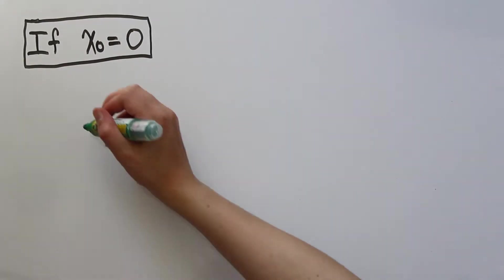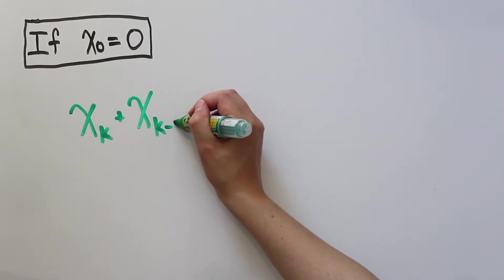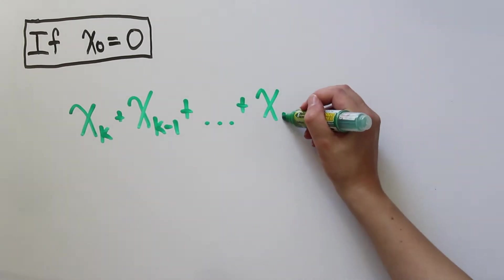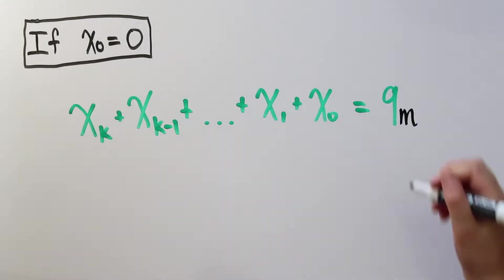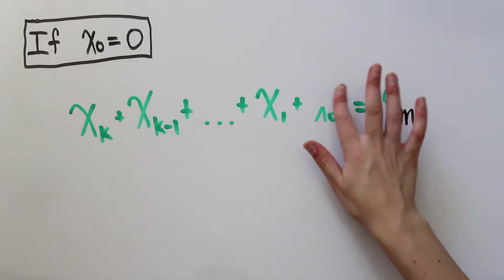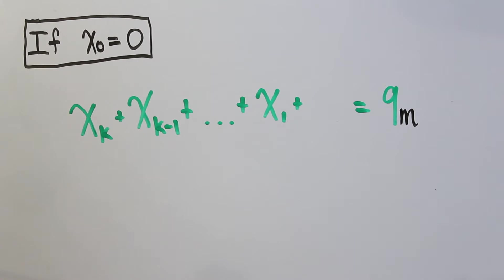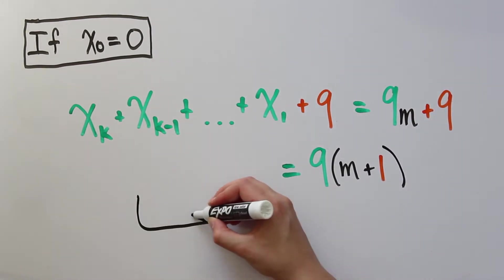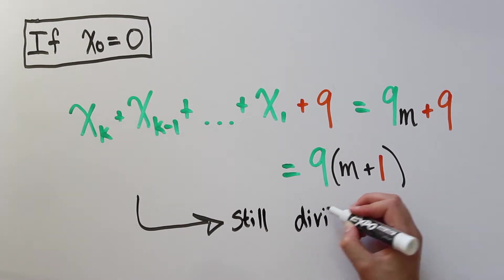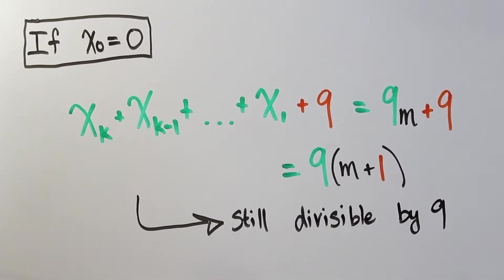Now we look at the sum of the new digits. We know that the old sum, xk plus xk minus 1 plus all the way to x0, is a multiple of 9, because that's in our assumption. For the new sum, we simply replace x0, which was a 0, with a 9. So the new sum will be 9 more than the original sum, and this means that the new sum is divisible by 9. So the 9's trick works for n plus 9 if x0 is 0.